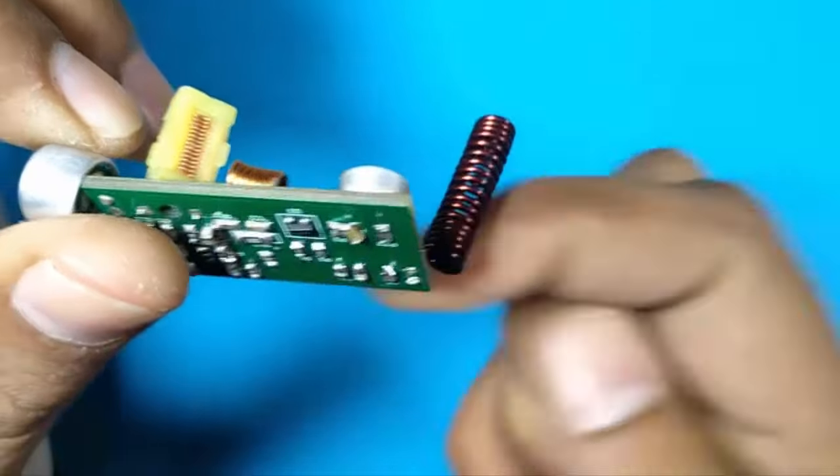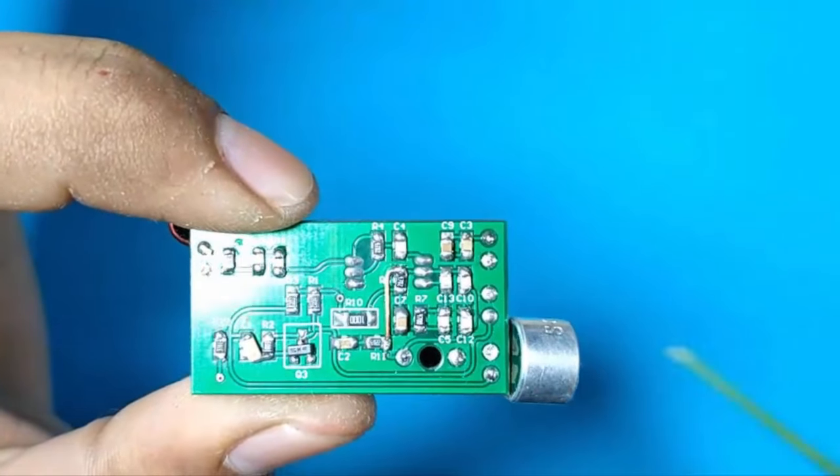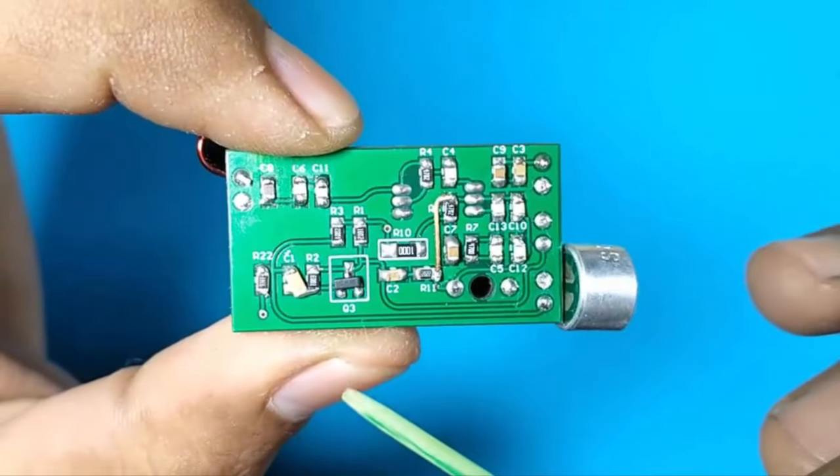On the back side of the PCB, you can see a few resistors and capacitors. I will explain the full schematic diagram in the next video.